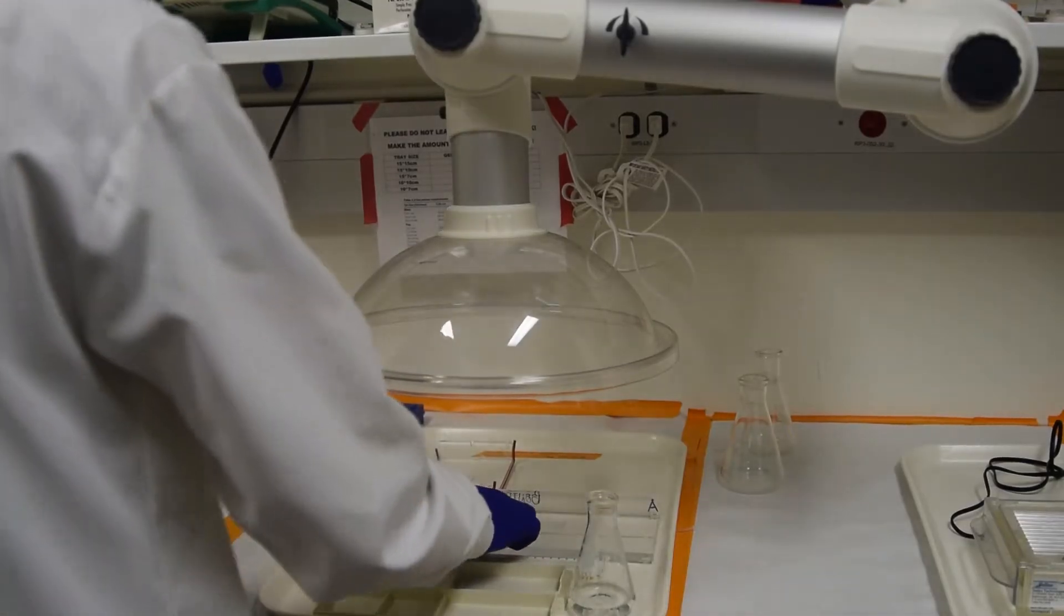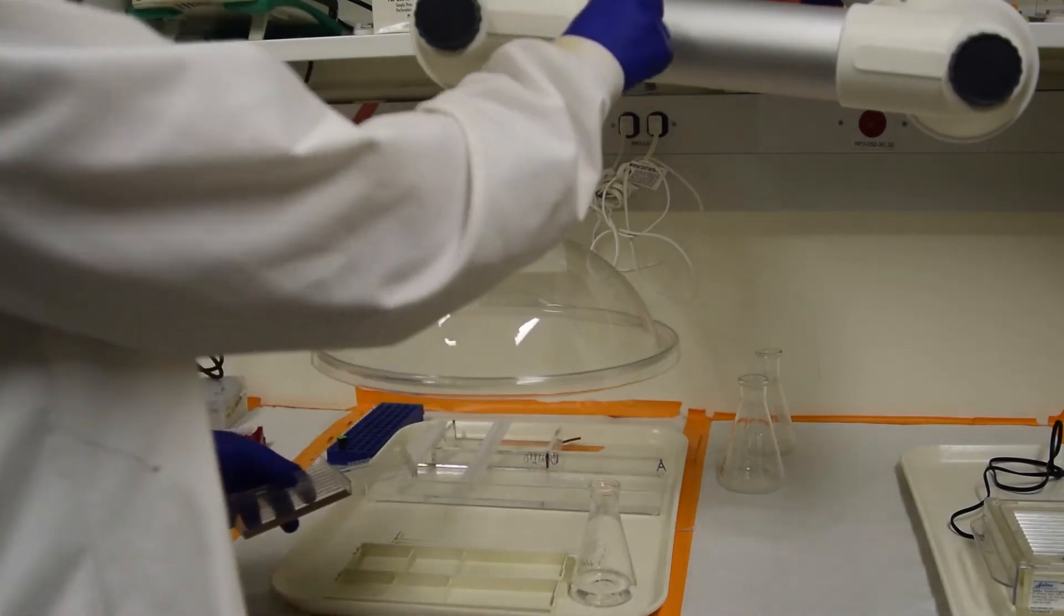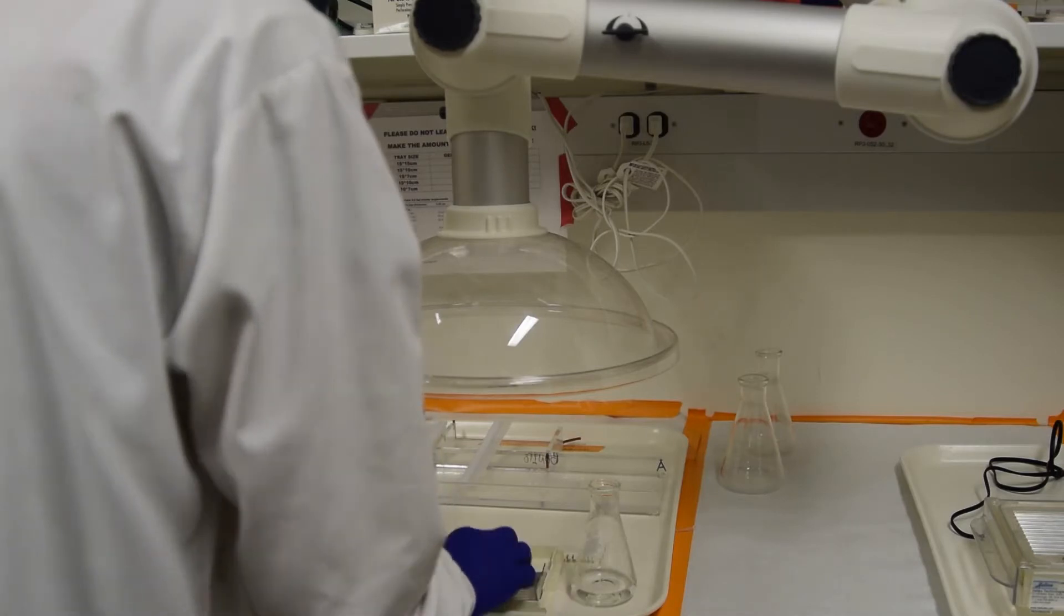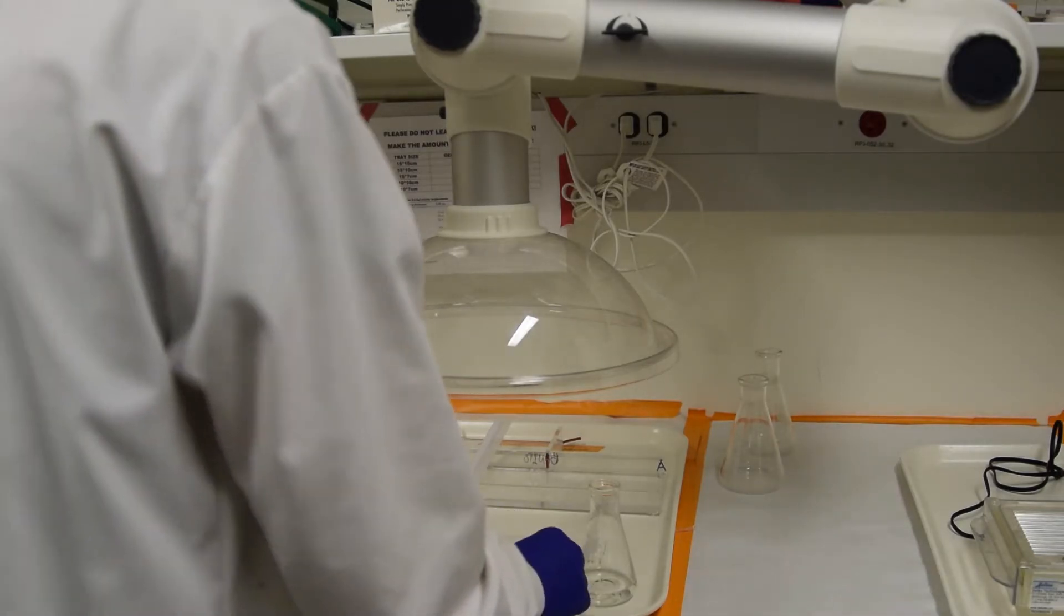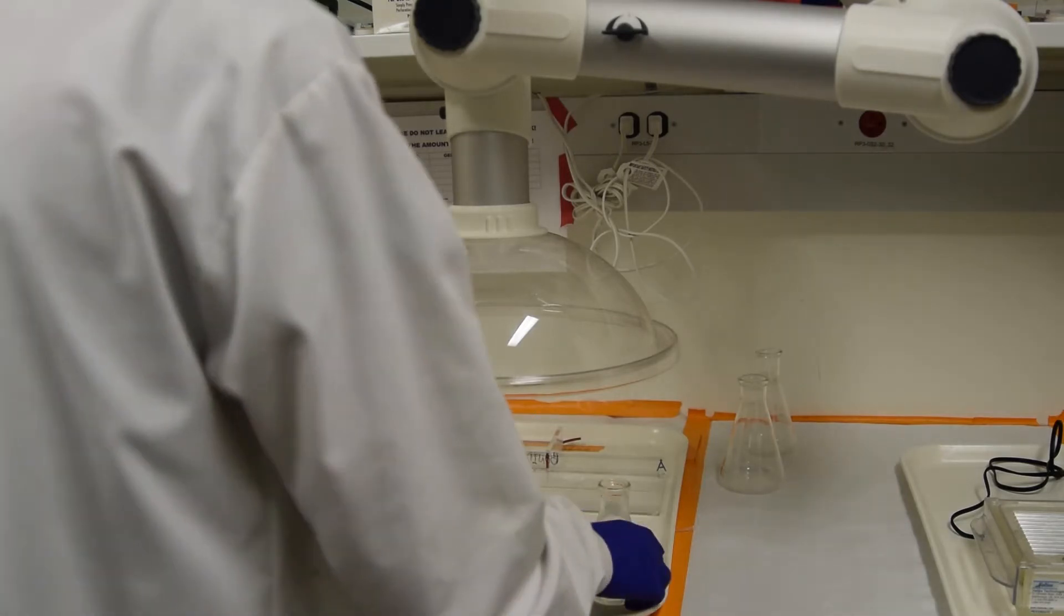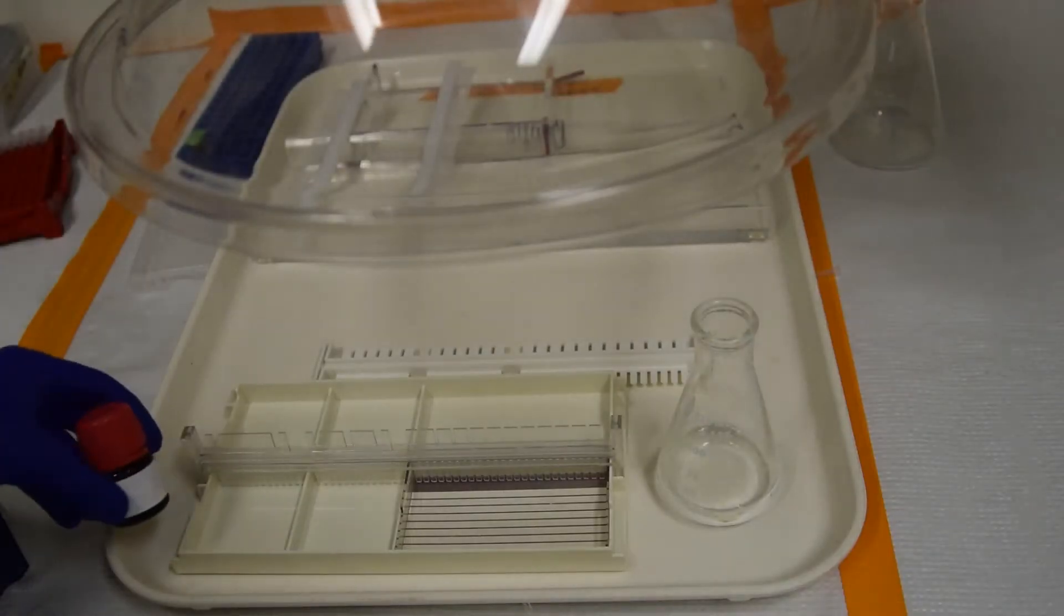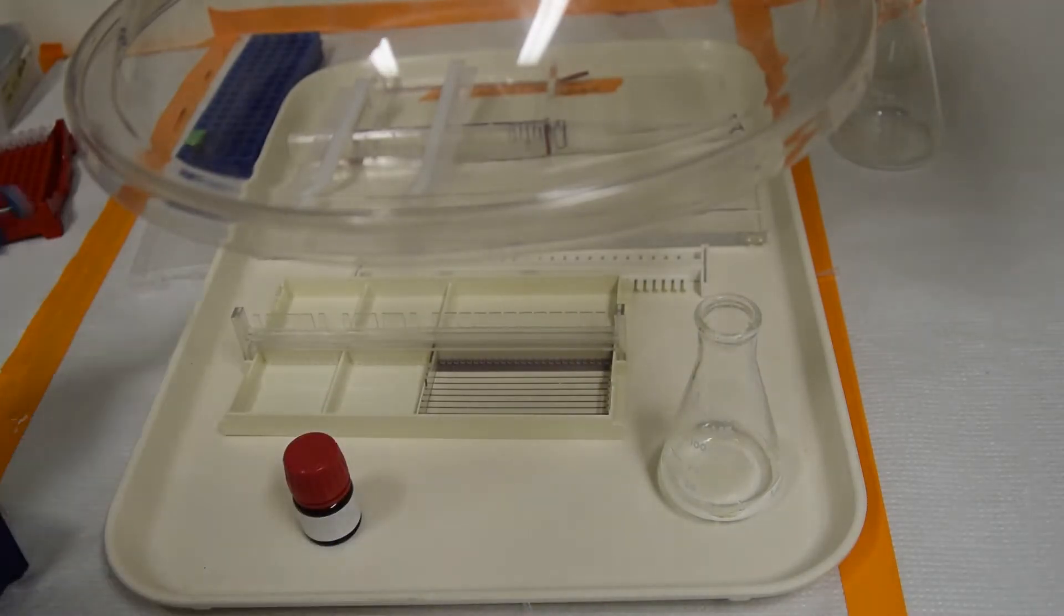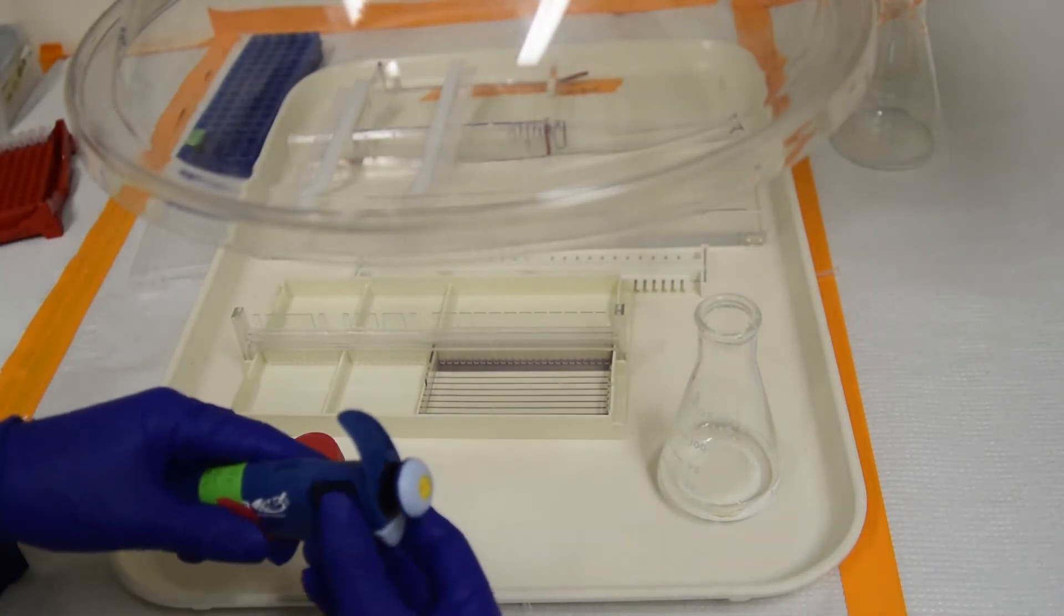Turn on the vent. Get the ethidium bromide off the shelf. We use 2.5 microliters per 100 milliliters of gel.